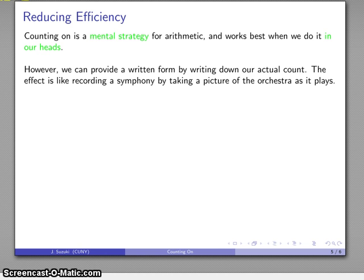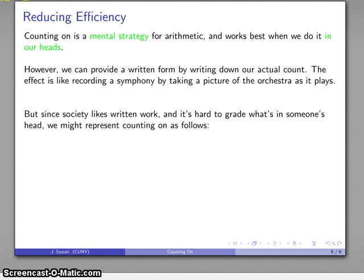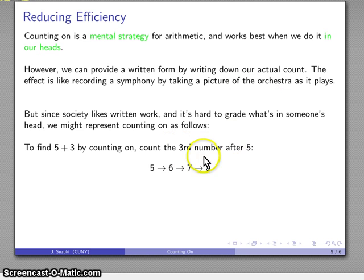Society, unfortunately, likes written work and it is hard to grade what's in somebody's head. So we might represent counting on in some manner like the following. If I want to find 5 plus 3 by counting on, remember I'm starting at 5 and then counting the third number after. I'll write down what the actual count is. From 5, I count on—the next number is 6, then 7, then 8. That's 1, 2, 3, my third number after. There's my 5 plus 3 equals 8.